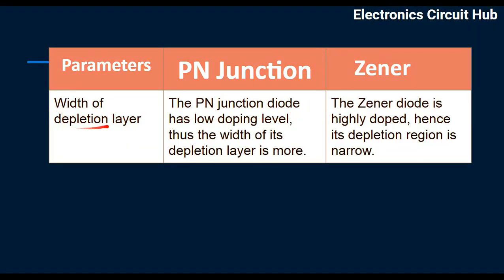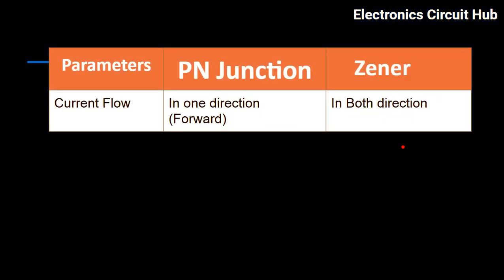Regarding the width of the depletion layer: the PN junction diode has a low doping level, so the width of its depletion layer is more. The Zener diode is highly doped, hence its depletion region is narrow. Regarding current flow: in a PN junction diode, current flows in one direction — that is, the forward direction — but in a Zener diode, current flows in both directions.